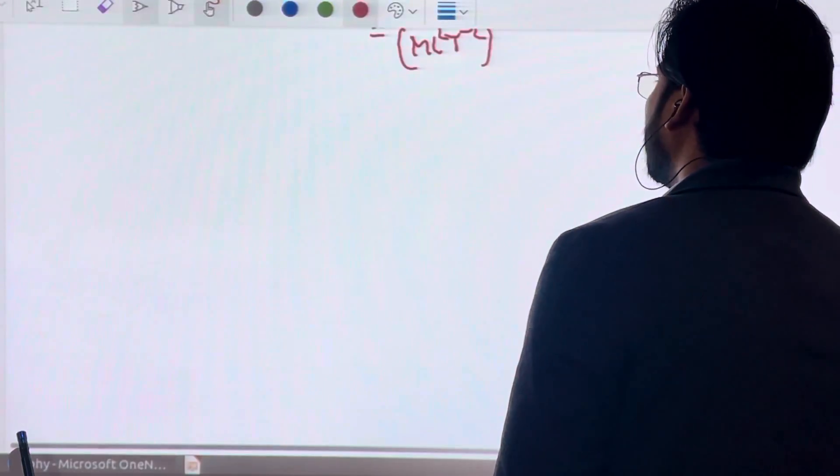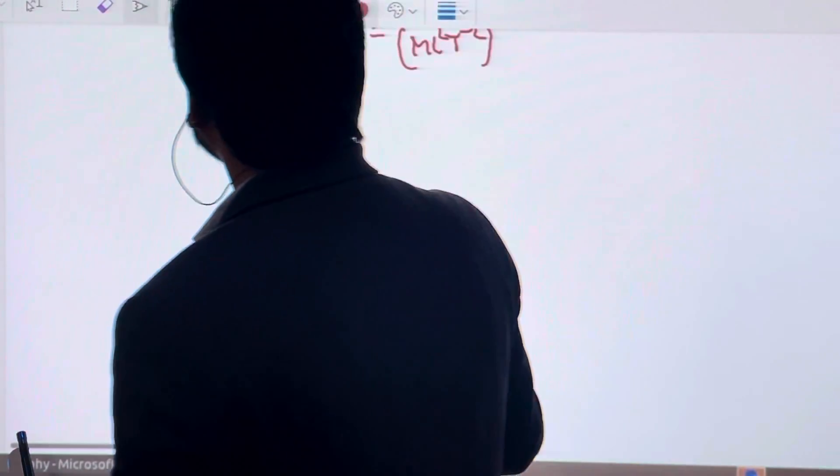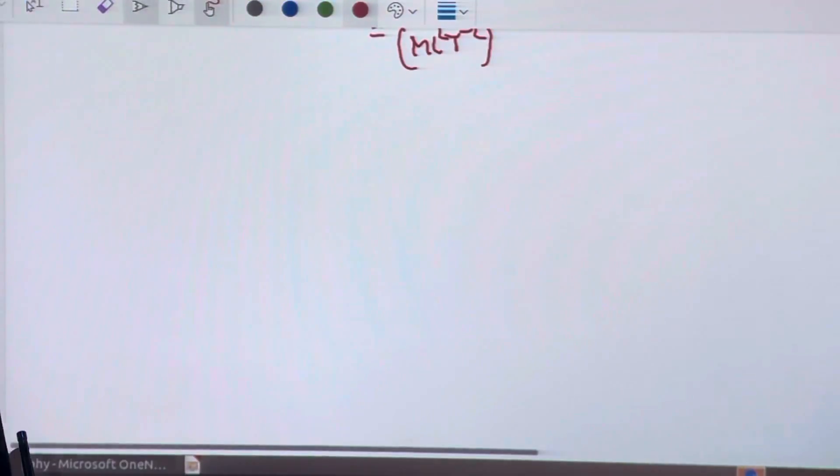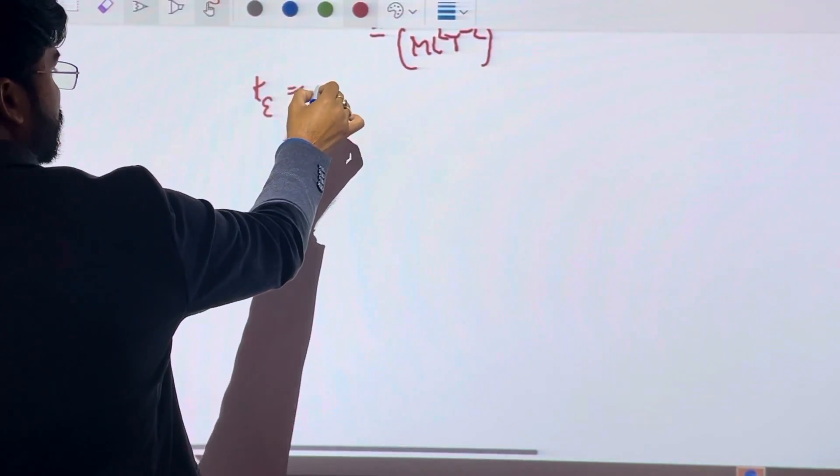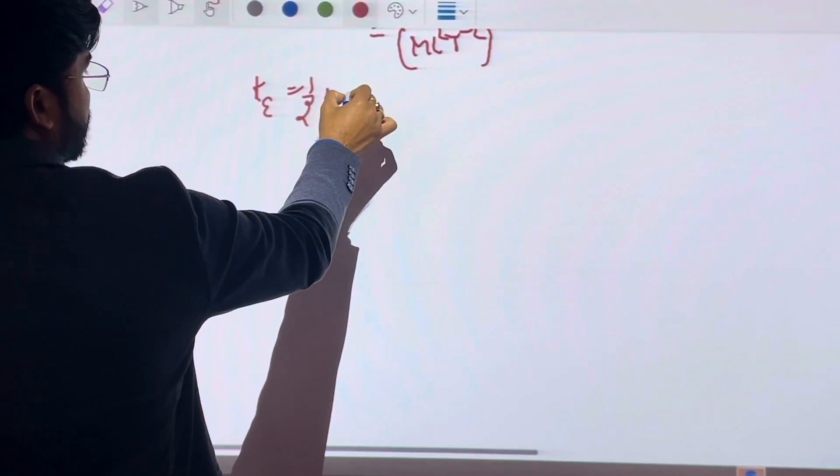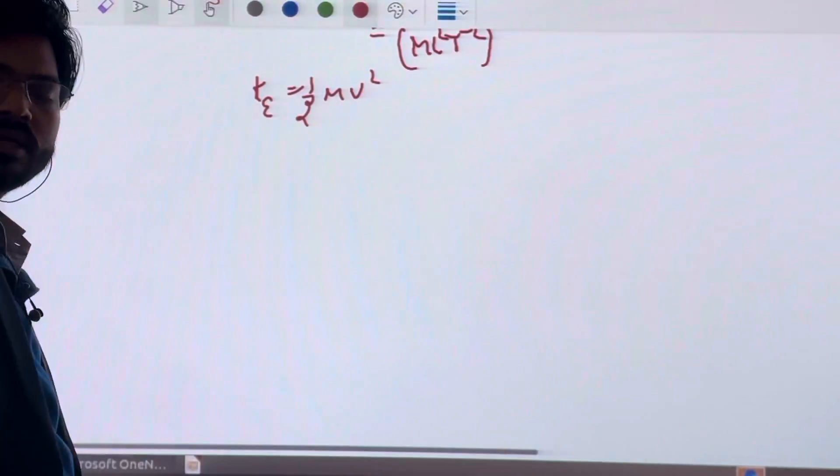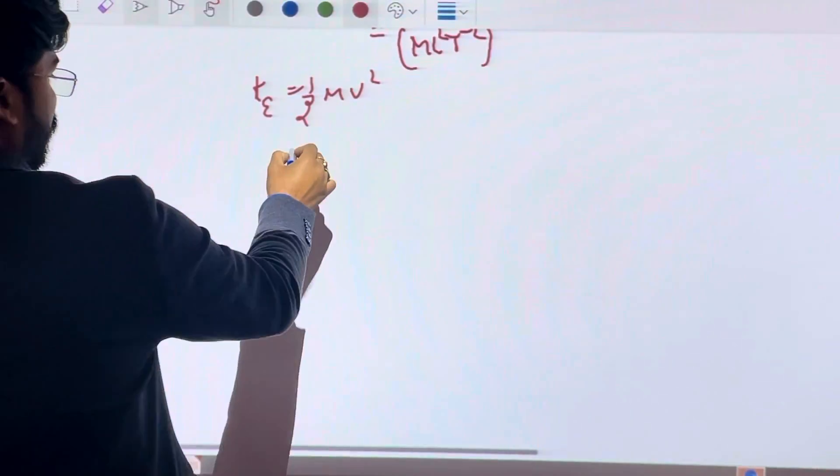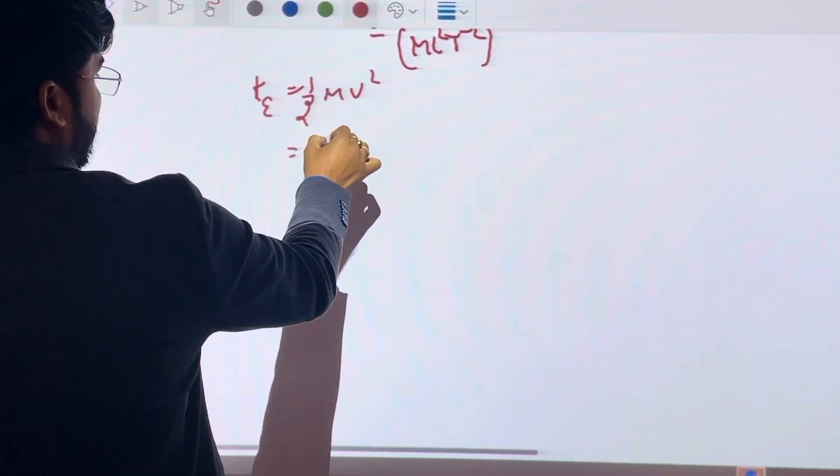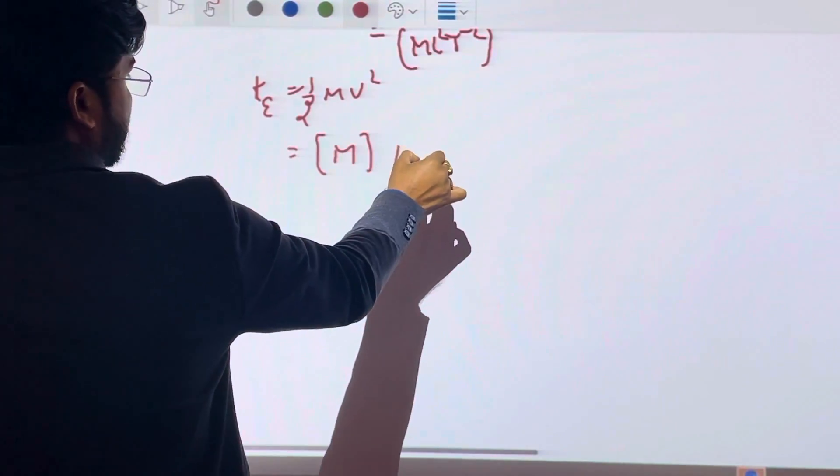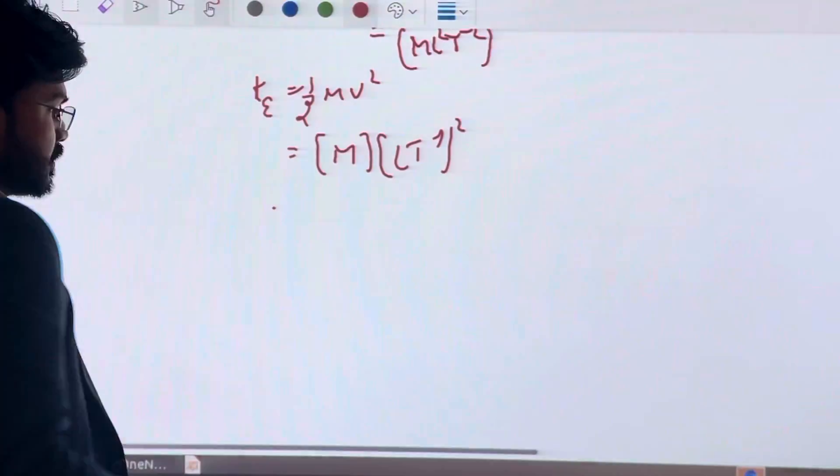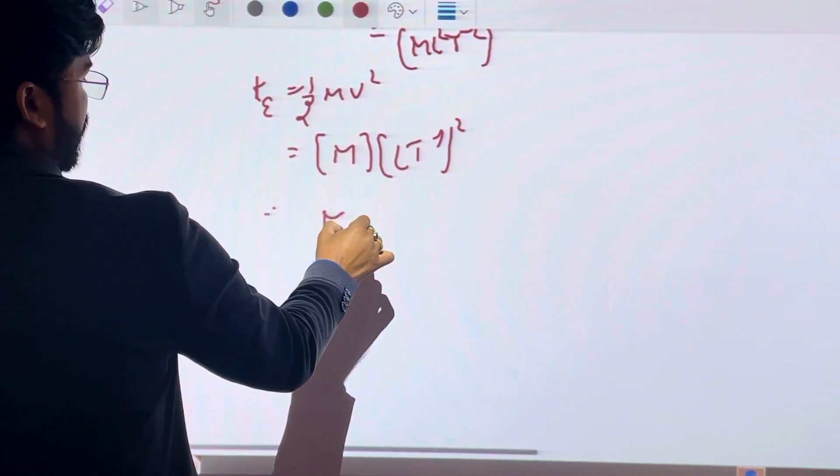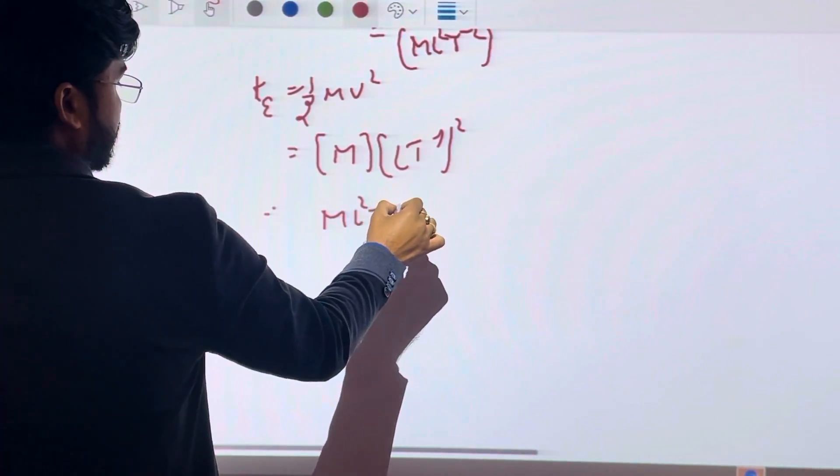Energy is also a form of work. Capacity of doing work is known as energy. Kinetic energy K equals one-half MV squared. One-half is constant, M for mass and velocity LT minus 1 squared, so dimension of K is ML²T minus 2.